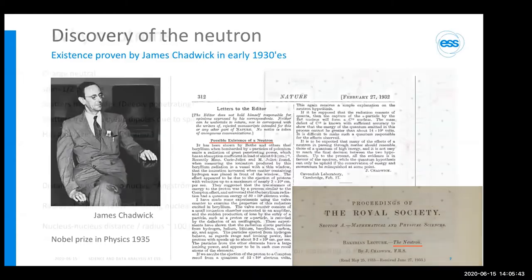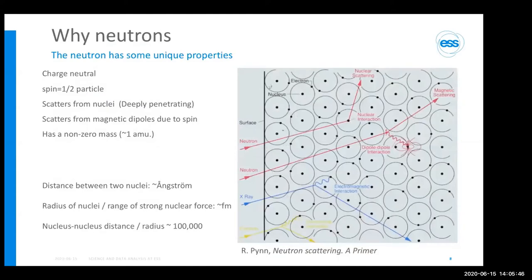What is unique about the neutron? First, it is neutral — hence the name neutron. It is a spin one-half particle. It scatters from nuclei, so it is deeply penetrating. The distance between two nuclei is on the order of angstroms, whereas the radius of the nucleus is on the order of femtometers. So from the perspective of a neutron, there is a lot of empty space in a crystal, whereas a photon sees a dense electron cloud.